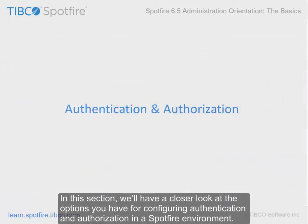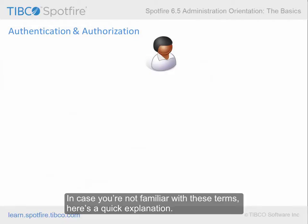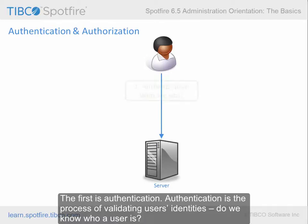In this section, we'll have a closer look at the options you have for configuring authentication and authorization in a Spotfire environment. In case you're not familiar with these terms, here's a quick explanation. When users log into a server, there are two things that happen before they get access. The first is authentication. Authentication is the process of validating users' identities — do we know who a user is?